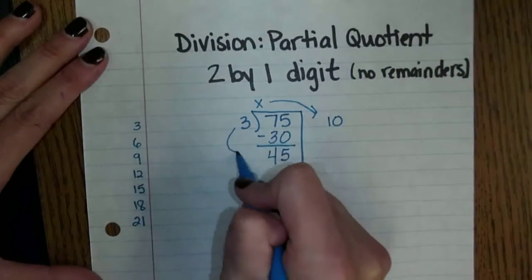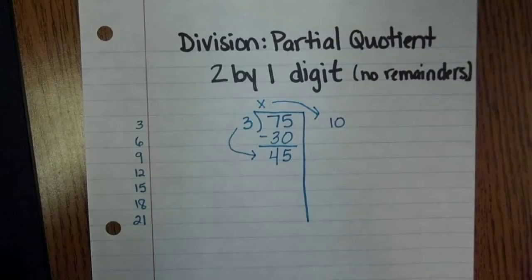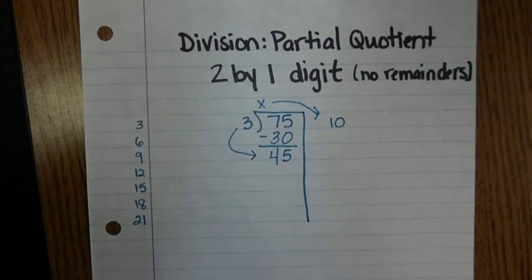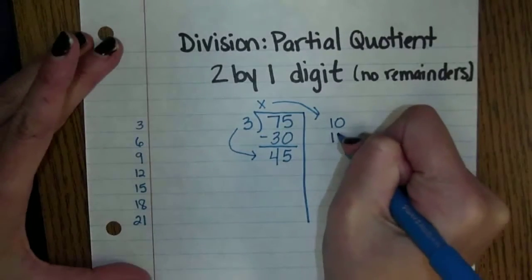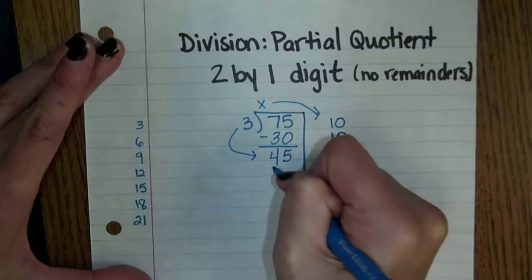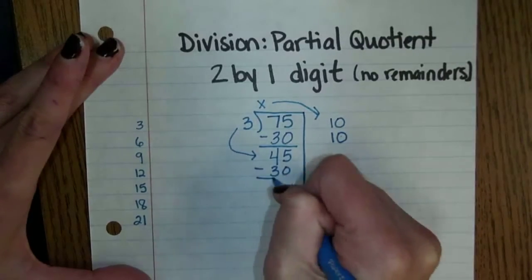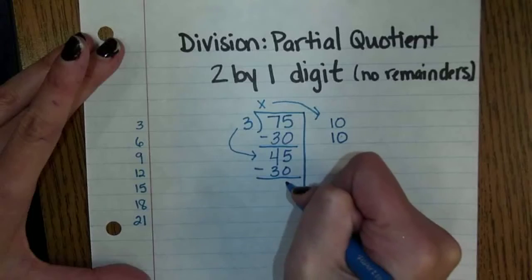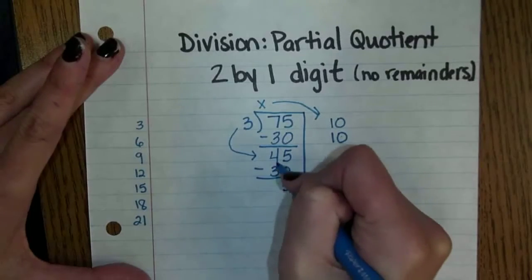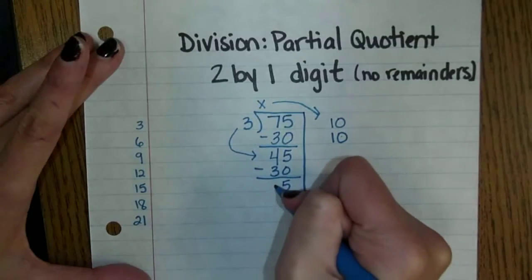Now this is a little bit smaller of a number to work with here. 3 into 45. Well I'm going to try and do another group of 10 here. So 3 times 10 is 30 and I'm going to subtract that to make that smaller. 5 minus 0 is 5 and 4 minus 3 is 1.